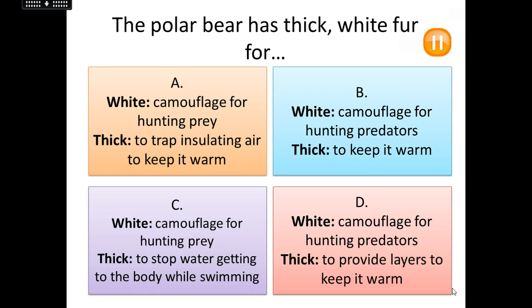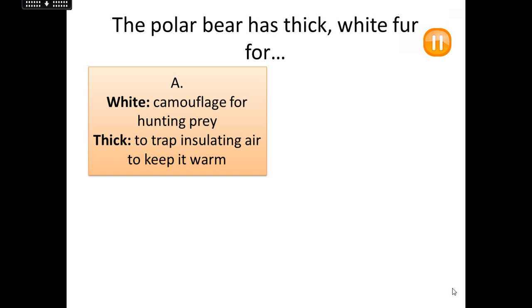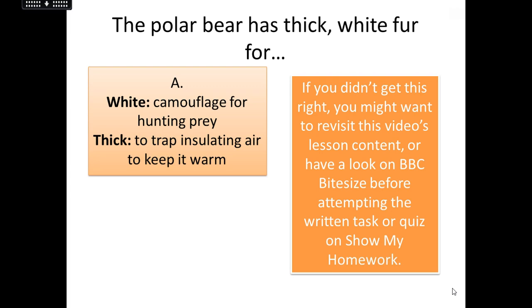So here's a multiple choice question for you. Pause the video and have a look: the polar bear has thick white fur — what is it for? Why is it white and why is it thick? Look at the two options on each one and make your decision. The answer is A: it's got white fur so it's camouflaged for hunting its prey — so it can creep up on things like seals. And it's also thick so it traps insulated air and keeps the polar bear nice and warm. If you didn't get that right, go back to the video or check the BBC Bitesize link on the Show My Homework entry before having a go at the written task or quiz.